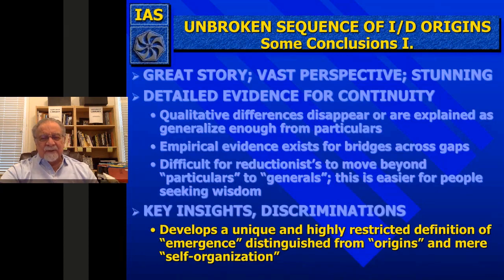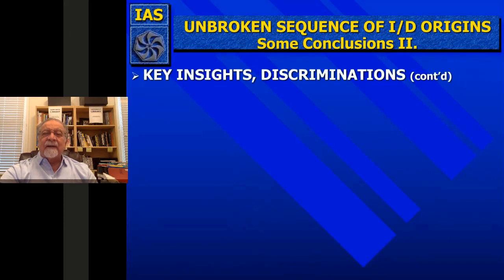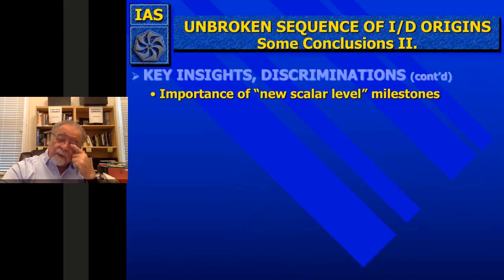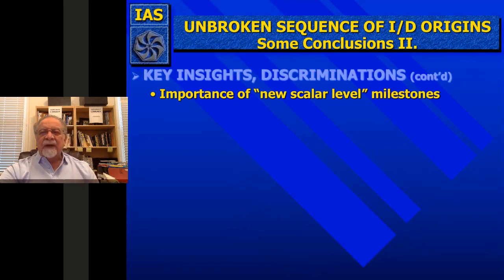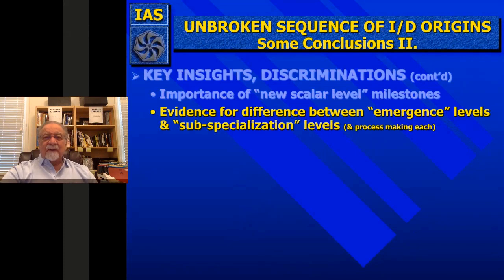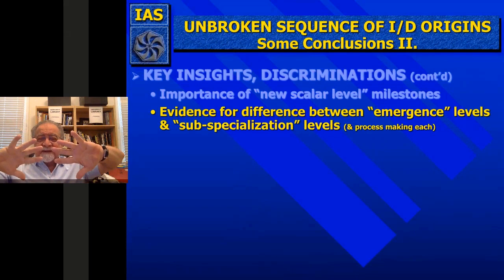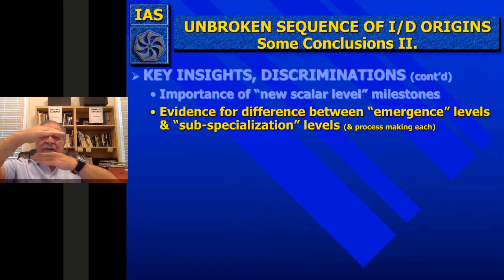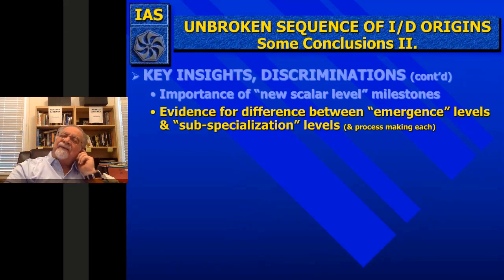This unbroken sequence develops a unique and highly restricted definition of emergence, which is different from origins, self-organization, or spontaneity. We look at new scalar origins and new scalar levels as milestones—only hierarchy theory and allometry theory talk about scalar levels, but it becomes very important here. There's a difference between an emergence level, hierarchical levels, and subspecialization levels. Take, for example, our cells: once cells became mature and abundant, they started diversifying in the types of organelles they had—subspecialization—which makes for the 200 cell types in our bodies.